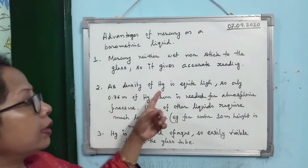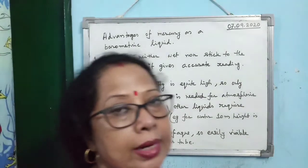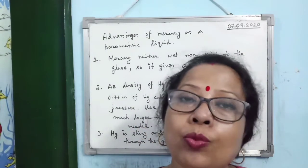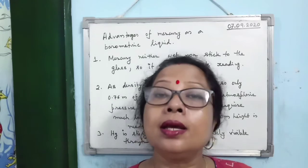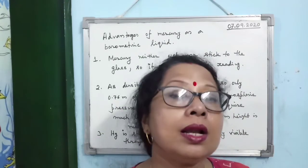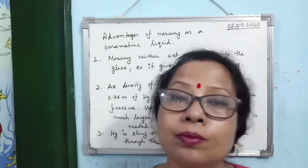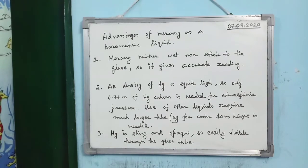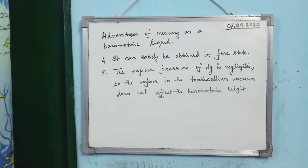If mercury is replaced by any other liquid, a much longer tube is needed. For example, replacing mercury with water would require a 10 m tall test tube to represent atmospheric pressure. Third, mercury is shiny and opaque, making it easily visible through the glass tube. Fourth, mercury can be obtained easily in pure state, and its vapour pressure is negligible.